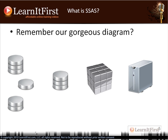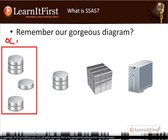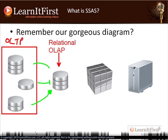Remember this diagram, because we're going to work with this as our paradigm for the rest of the chapter. We have our OLTP systems on one side, then our relational OLAP — the relational data warehouse — stored in SQL Server. The tool we use to feed the relational data warehouse is SSIS, doing ETL: extract, transform, and load. So we load the data warehouse using SSIS.